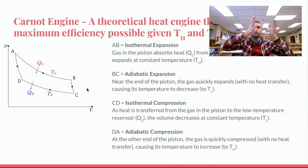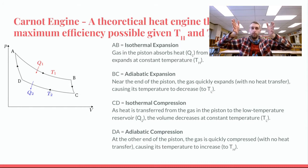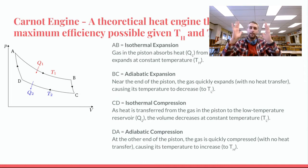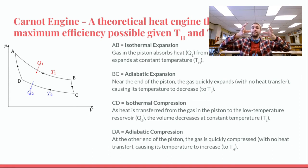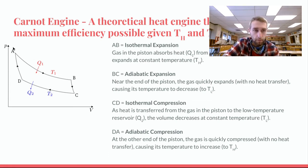The very last part of that expansion is adiabatic. So isothermal, isothermal, isothermal. And then at the very end, that last expansion from B to C happens so quickly that there isn't time for heat transfer. So it's an adiabatic expansion, which causes the temperature to decrease. So you can see from B to C, we jumped from this isotherm here down to a lower temperature isotherm here.